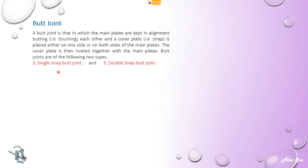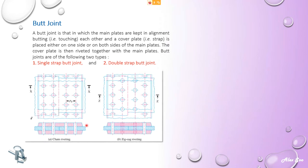Butt joint: a butt joint is one in which the main plates are kept in alignment — butting, meaning touching each other — and a cover plate or strap plate is placed either on one side or both sides of the main plates. The cover plate is then riveted together with the main plates. We have single strap butt joint and also a double strap butt joint. The plates shaded in blue are considered the main plates.